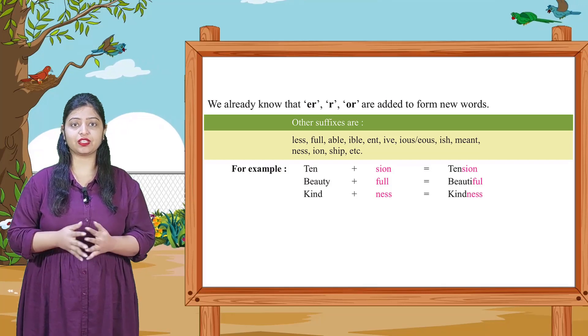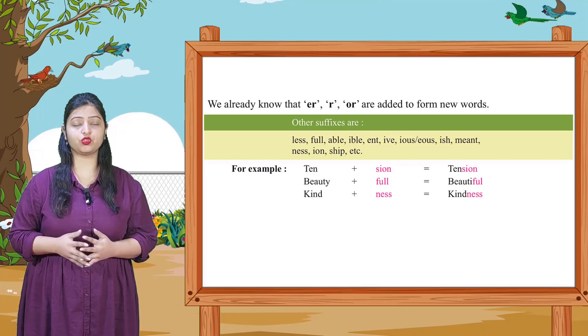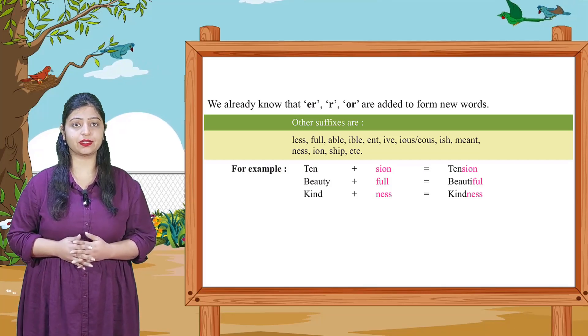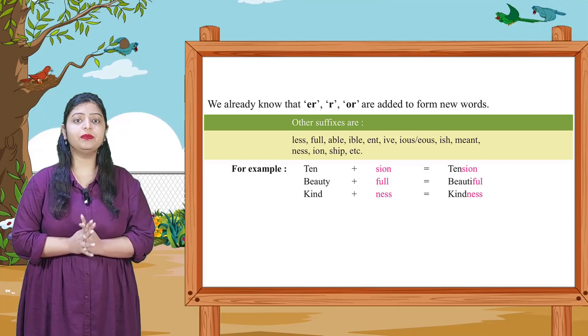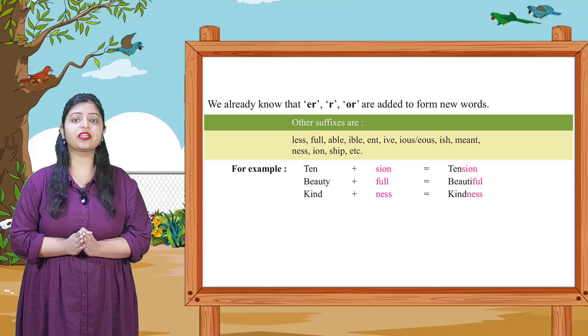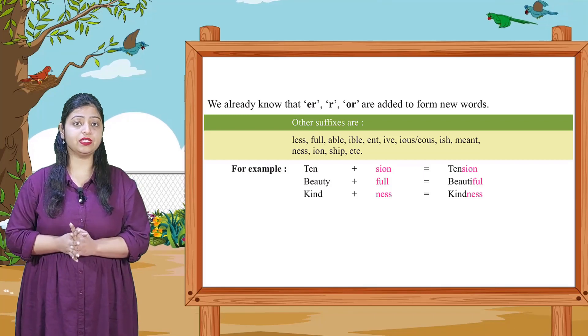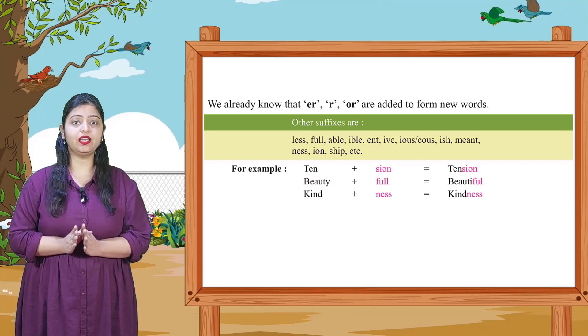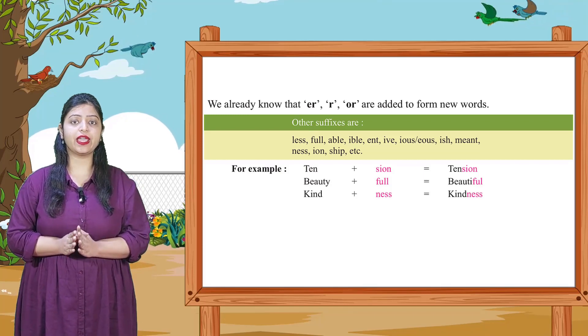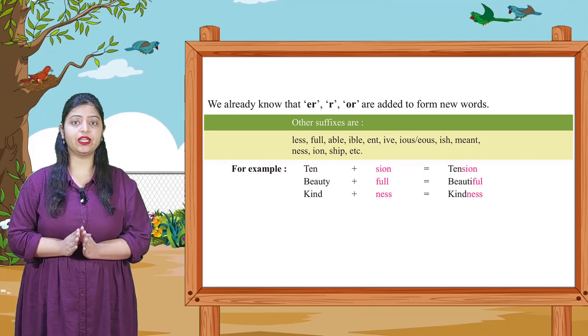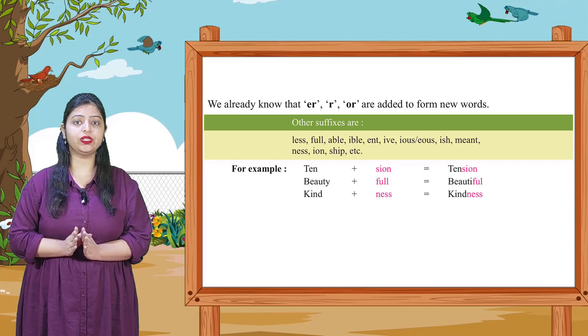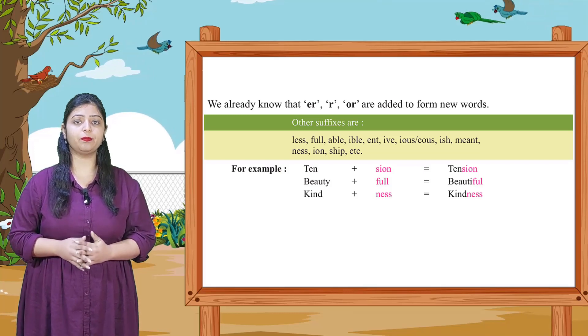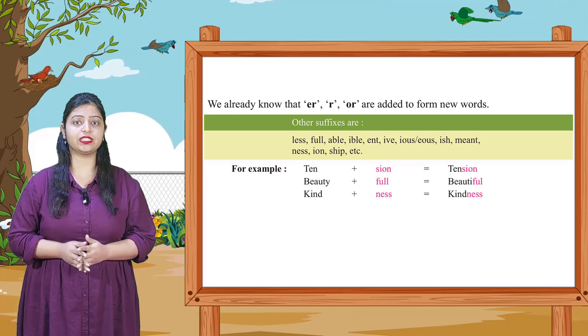Kuch aur suffix ke examples: ten + sion = tension, beauty + ful = beautiful, kind + ness = kindness.